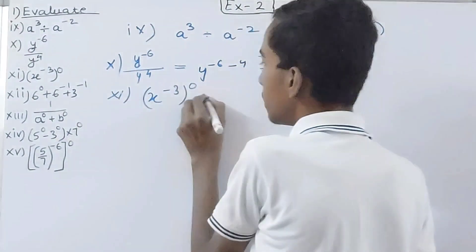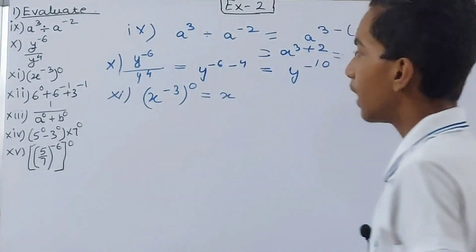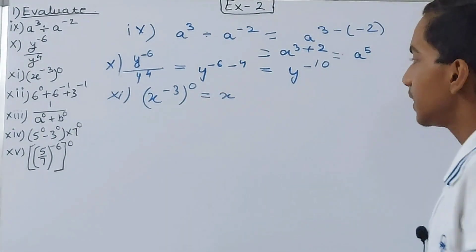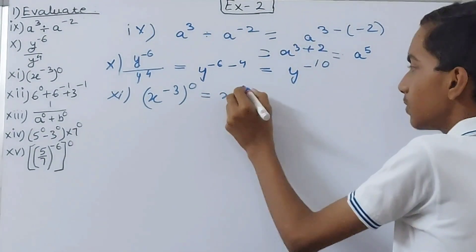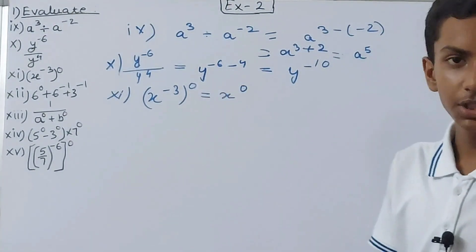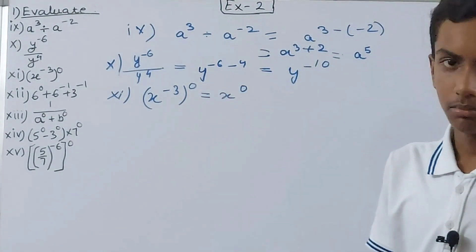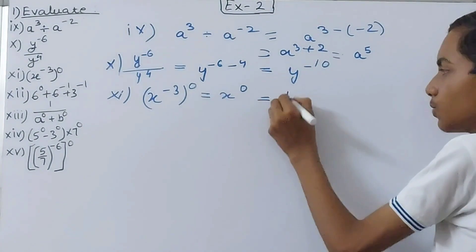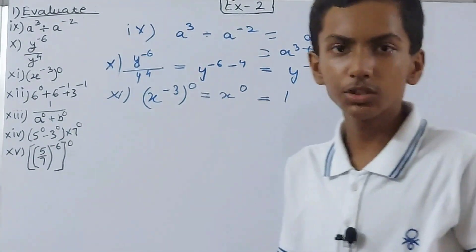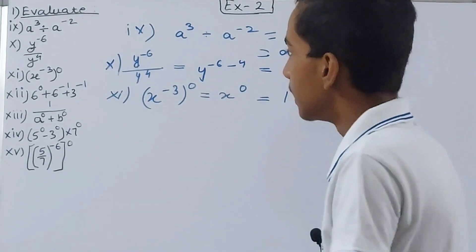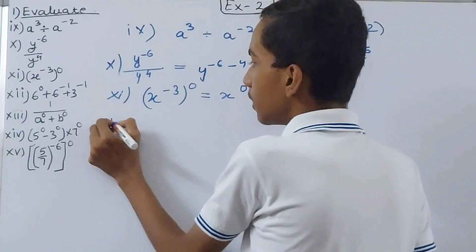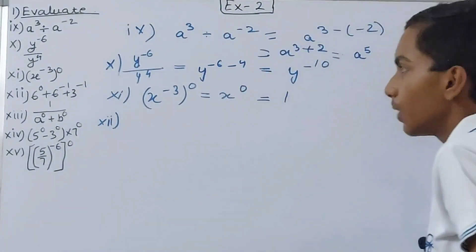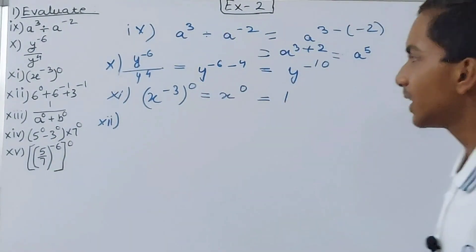The 11th part is x to the power minus 3 to the power 0. Multiply the exponents: minus 3 times 0 is 0. So it becomes x to the power 0, and any number raised to power 0 is 1.